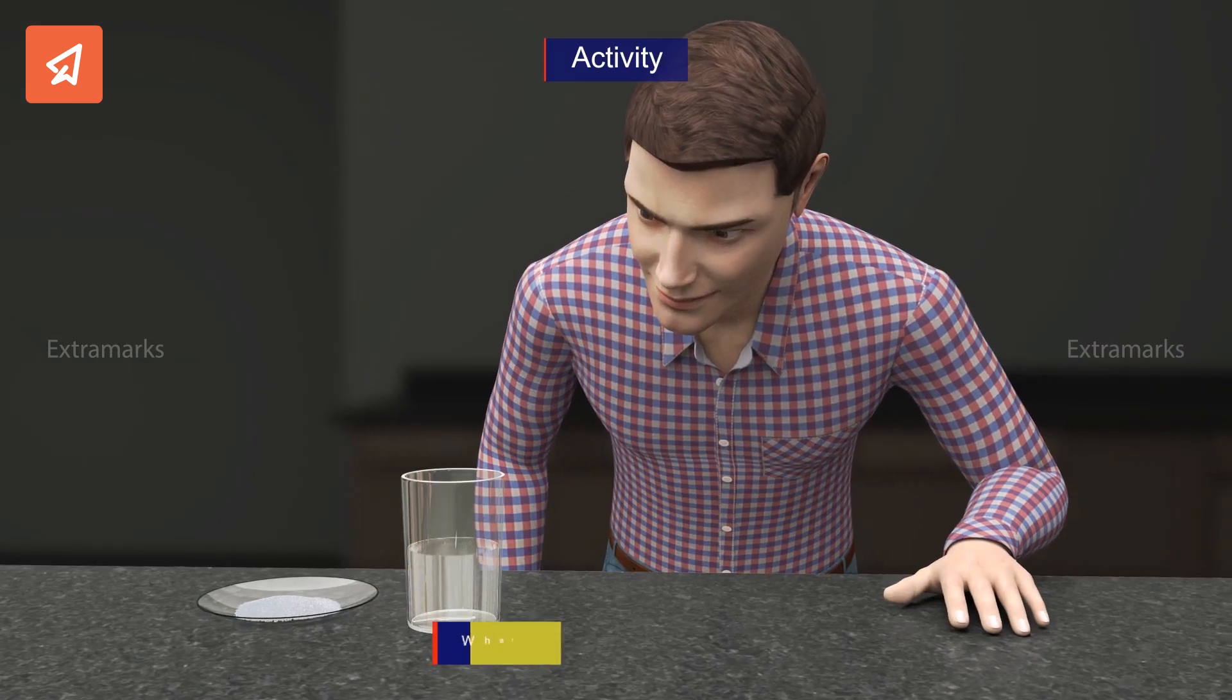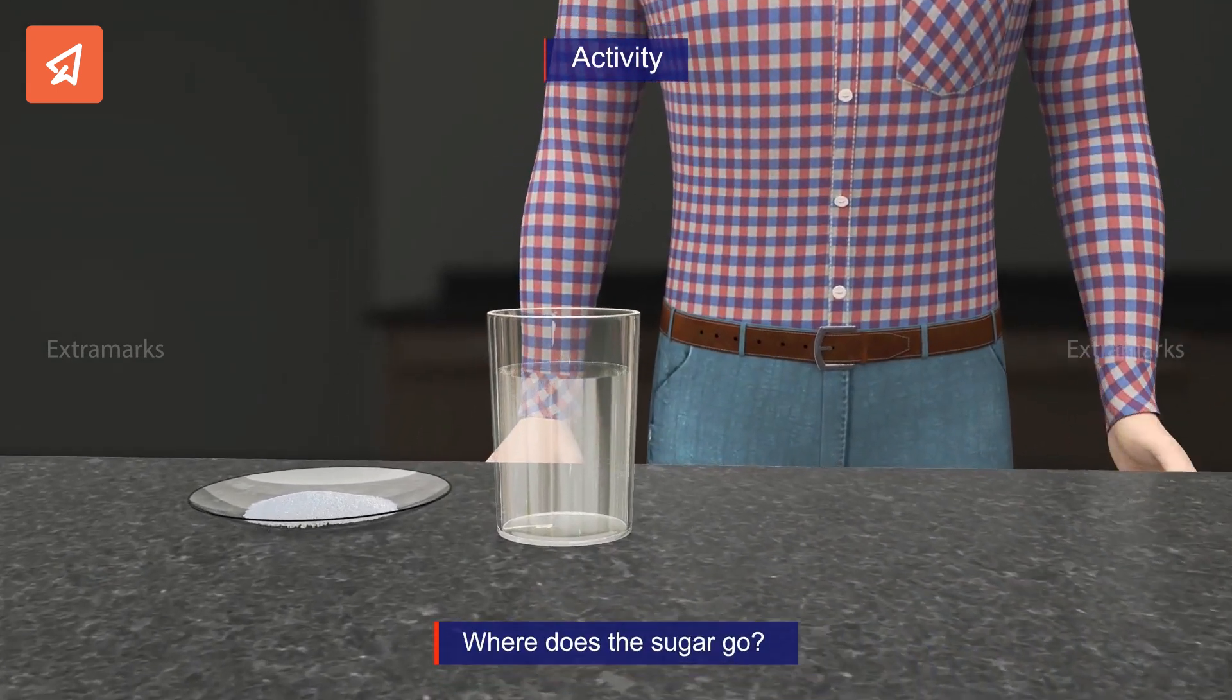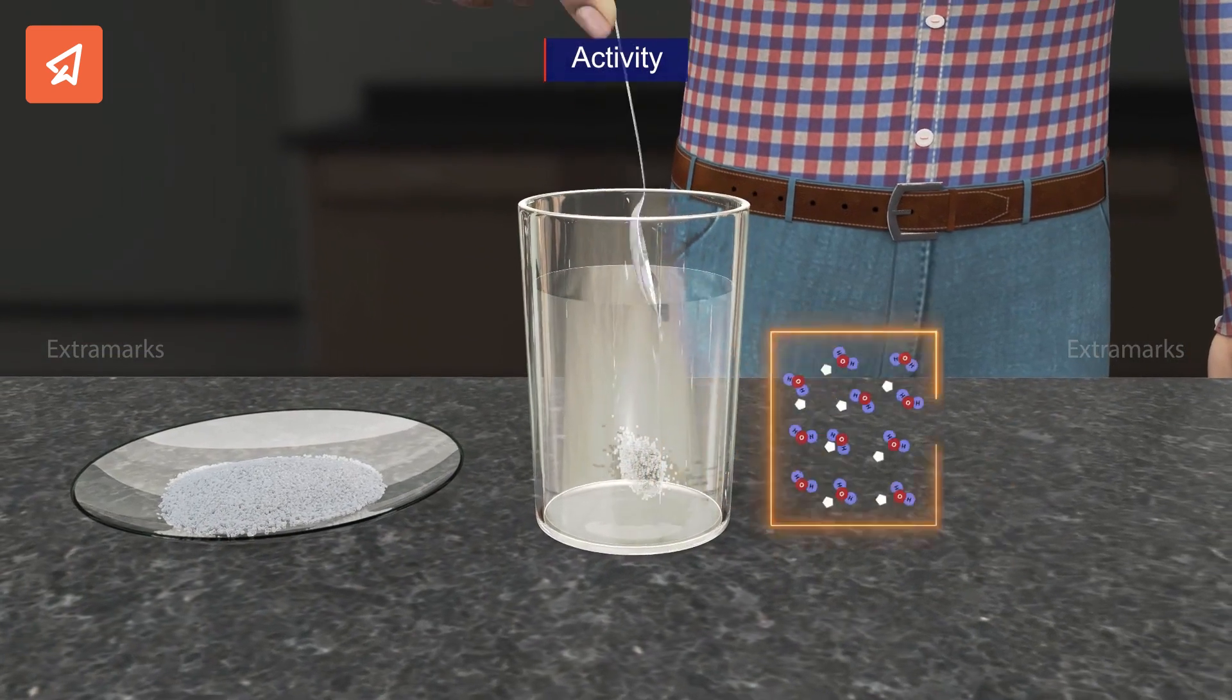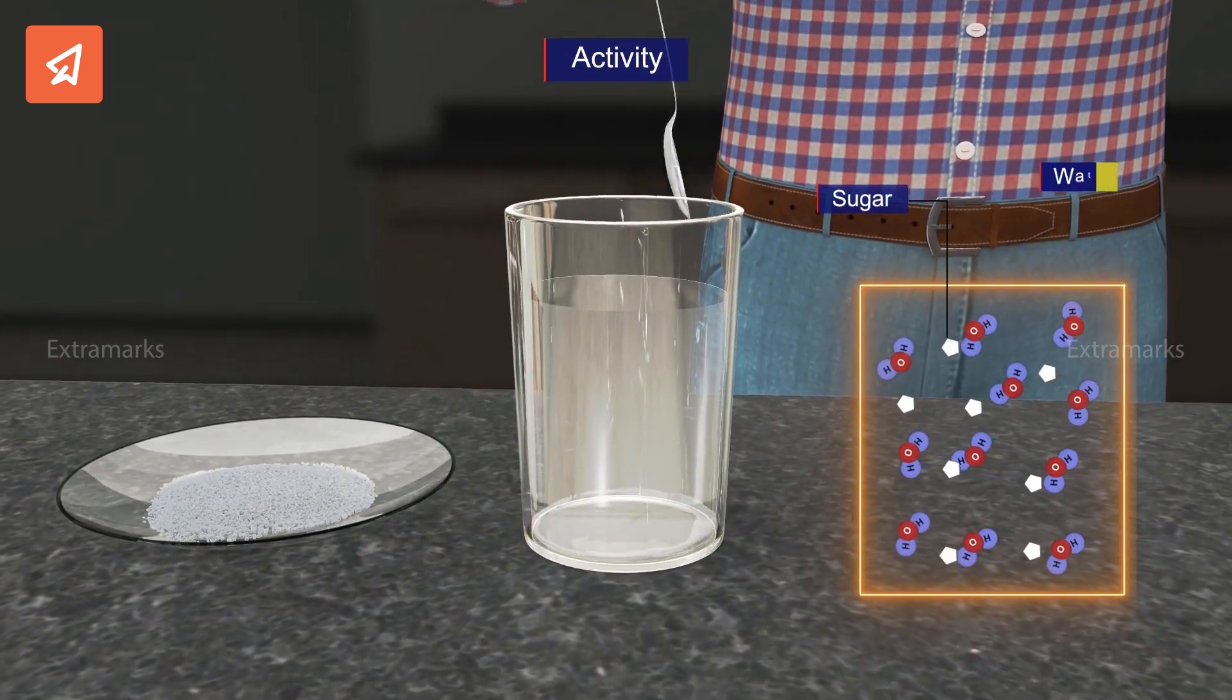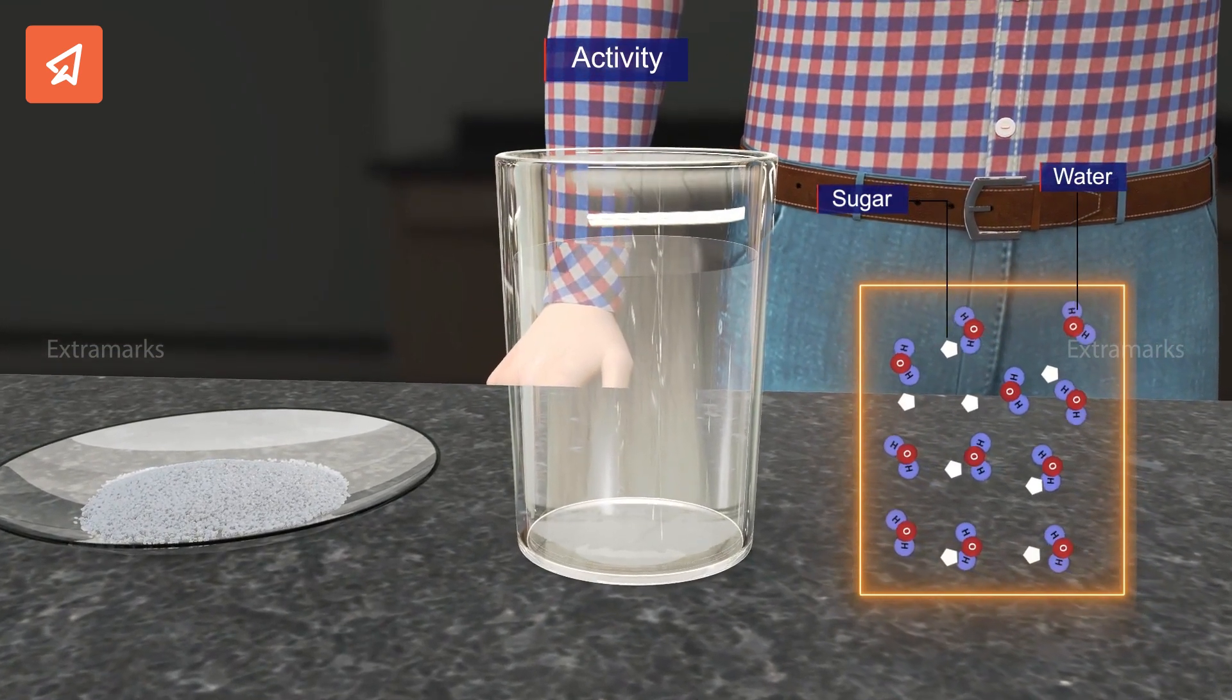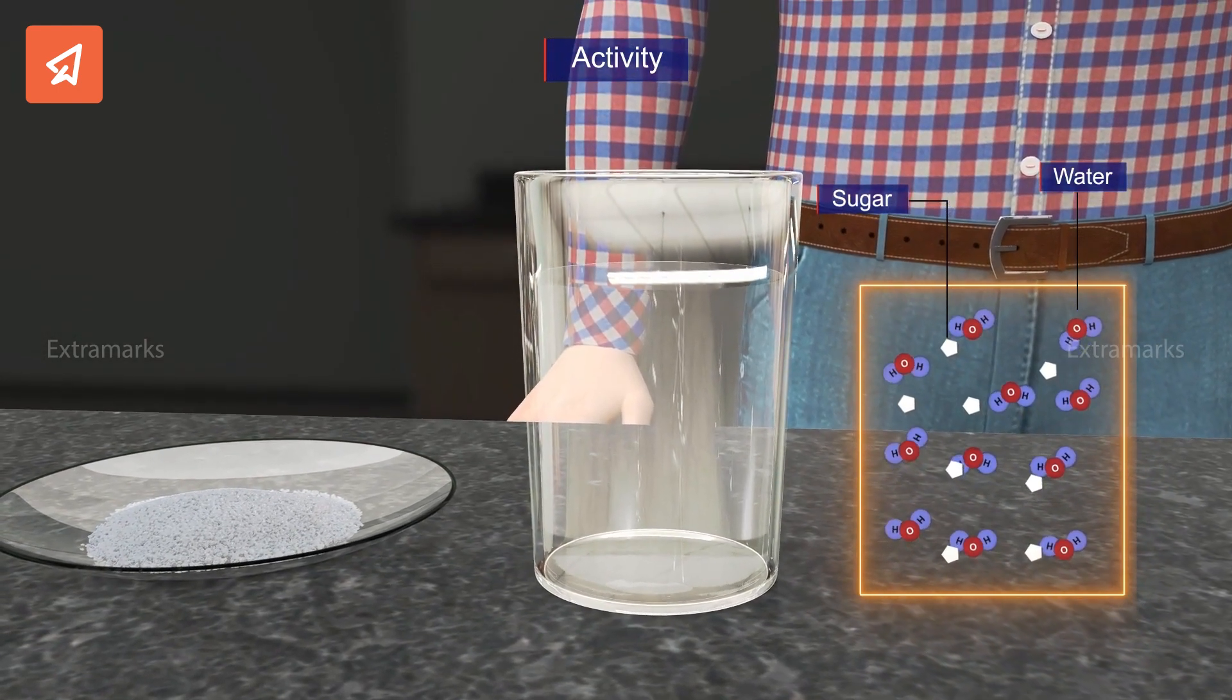One must ask, what happens to the sugar and where does it go? The only way to explain this is by the idea of matter being particulate in nature. From the viewpoint of chemistry, both sugar and water are made up of particles. When sugar is dissolved in water, the sugar particles occupy spaces between the water particles and mix with them.